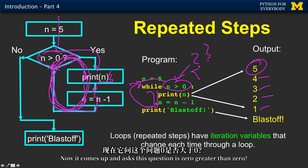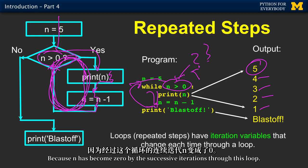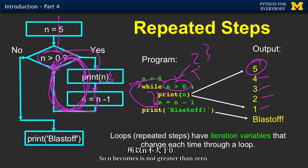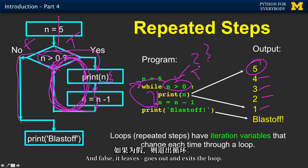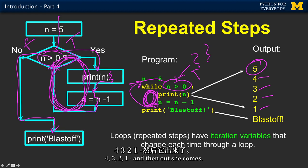Because n has become zero by the successive iterations through this loop. So n is not greater than zero. This switches from a true to a false. And false, it leaves, goes out, and exits the loop. So over here, it goes five, four, three, two, one, and then out she comes. And as soon as this becomes false, then this loop exits.